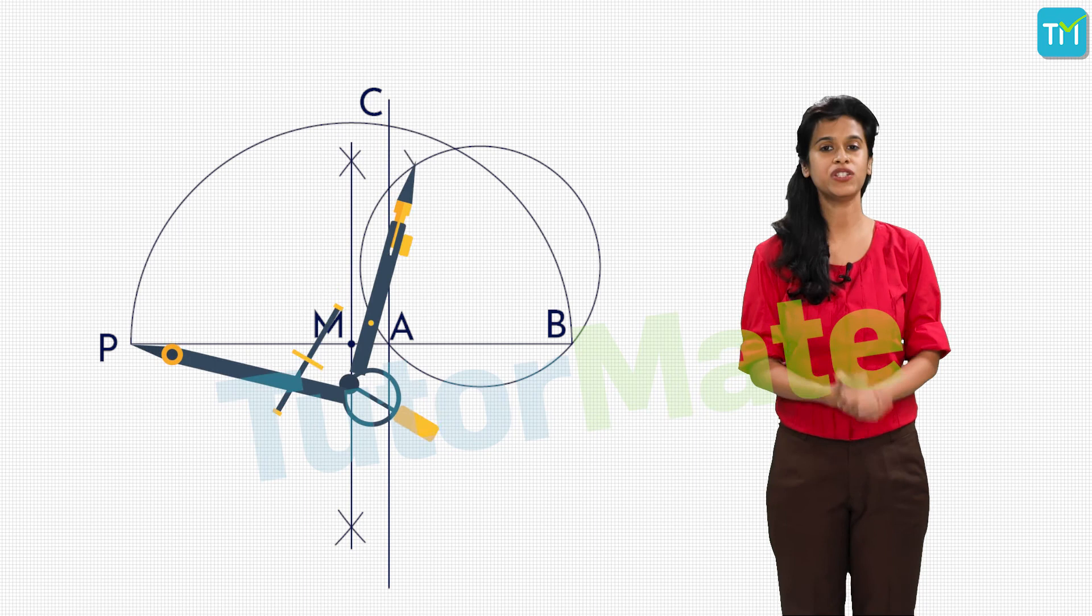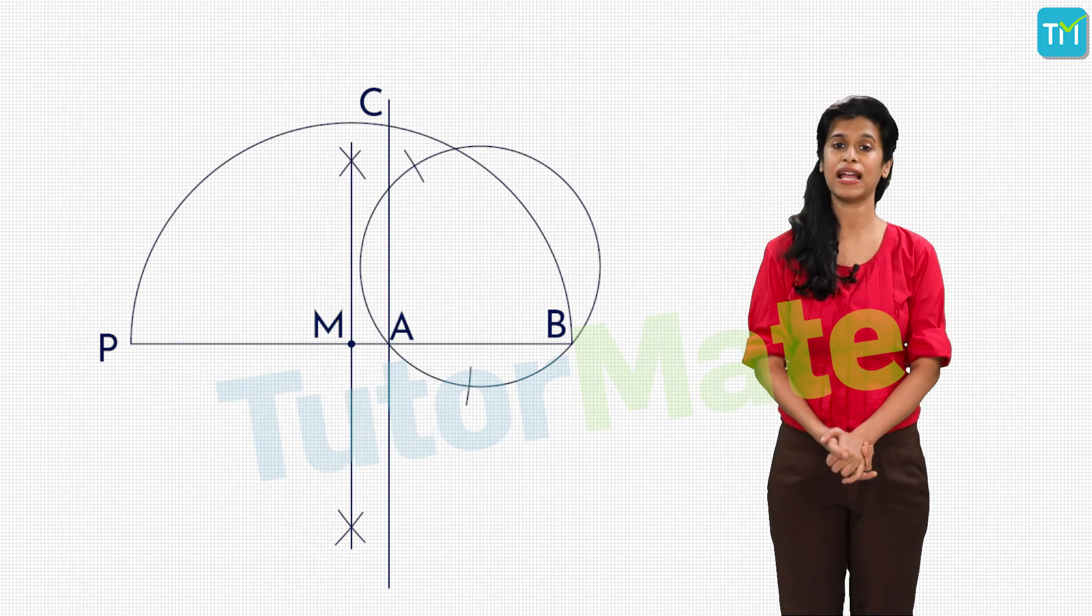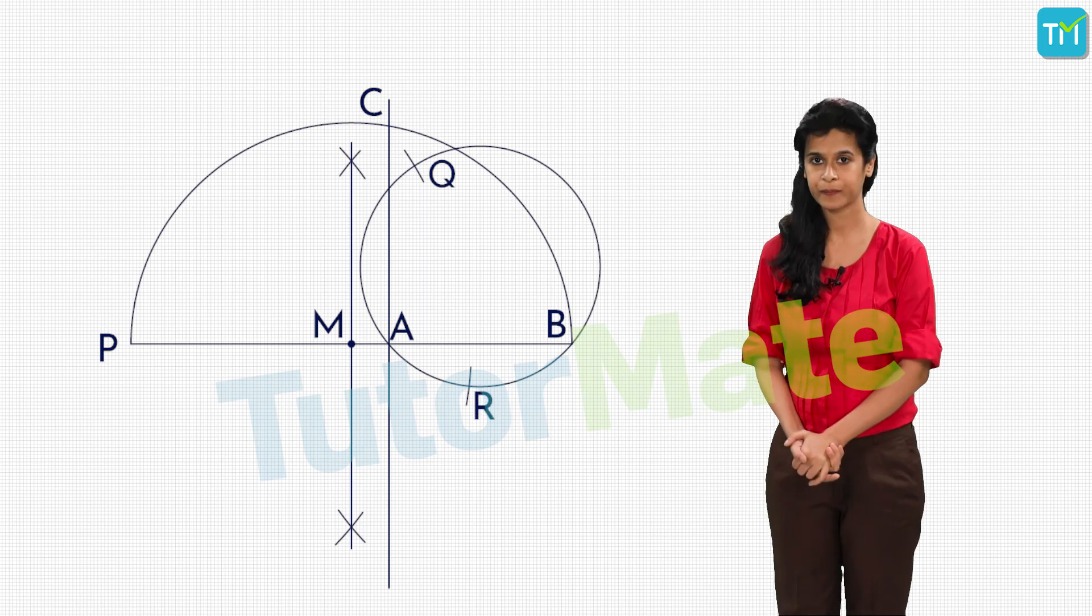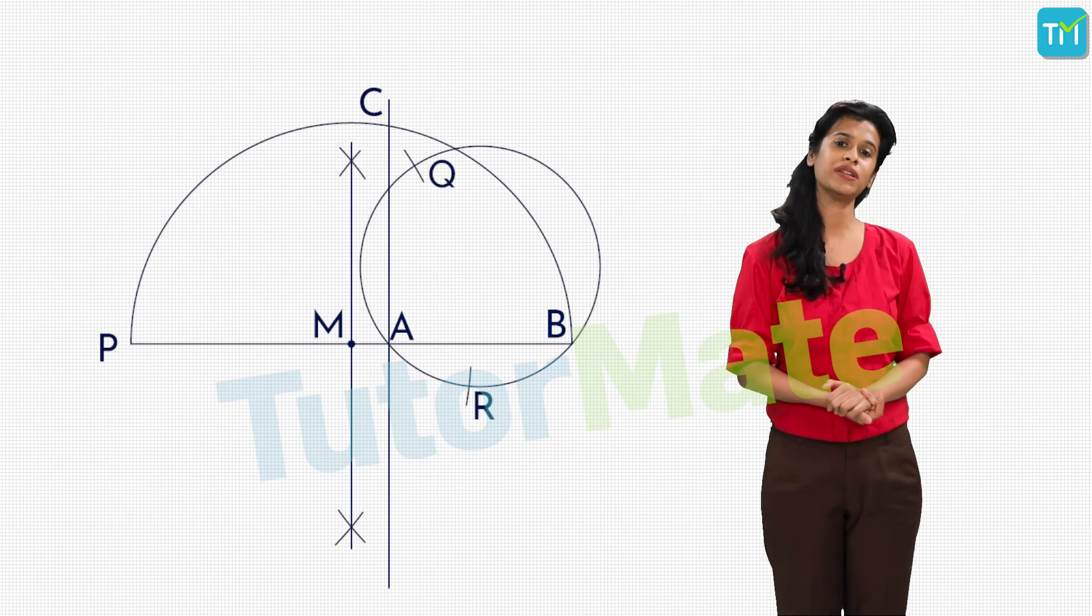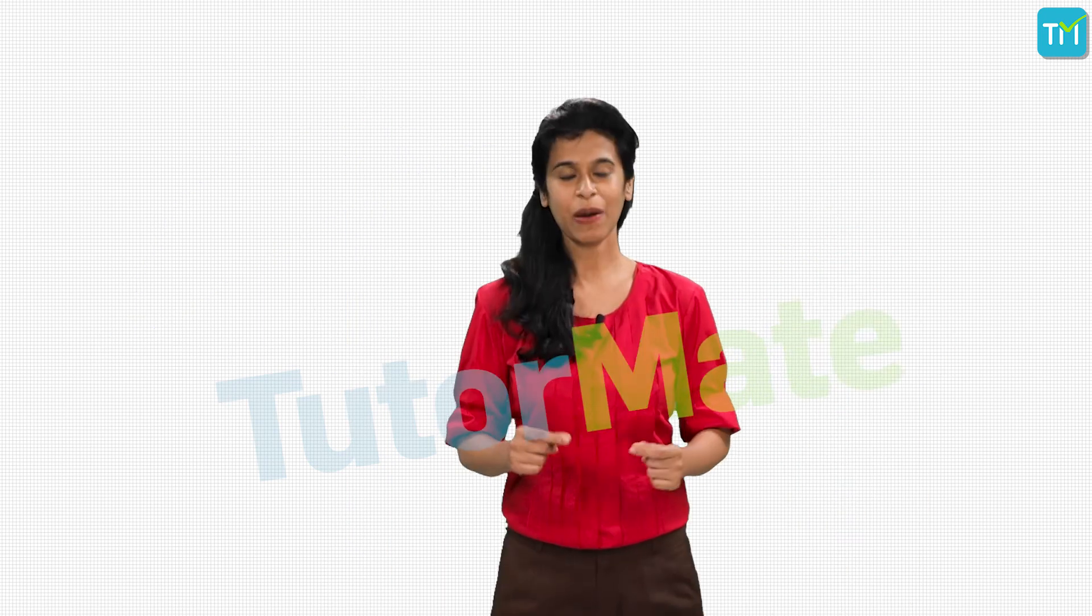Let this arc cut the given circle at points Q and R. Finally, we join PQ and PR to get the required tangents. Remember that I promised to tell you how Plato's three challenges were addressed.